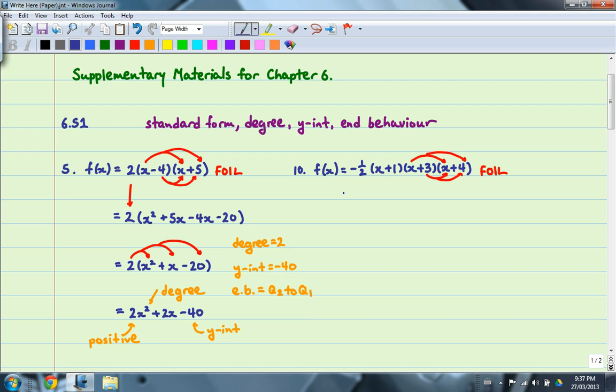So in this case, once again, I have the negative 1 half still. That doesn't change. But when I FOIL, I'm going to get 4 terms. x times x gives me x squared. x times 4 gives me 4x. 3 times x gives me 3x. And 3 times 4 gives me 12.